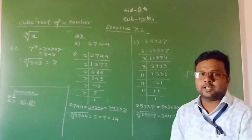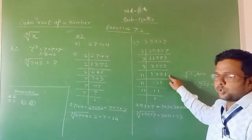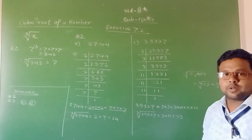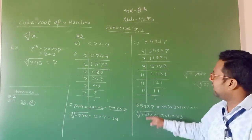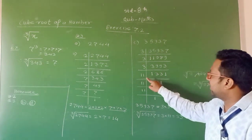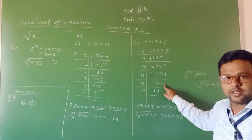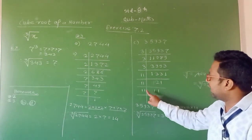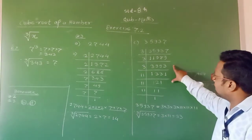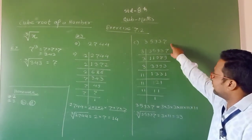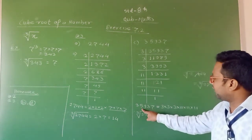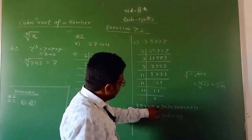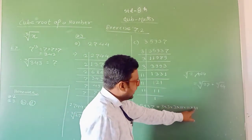1331 is not divisible by 3. Next prime number is 5 — not divisible. Then 7 — not divisible. Then we check for 11. This number is divisible by 11, and after division we get 121. 121 divided by 11 gives 11. 11 divided by 11 gives 1. So the prime factors of 35,937 are 3 into 3 into 3, and 11 into 11 into 11.